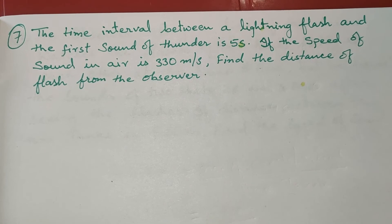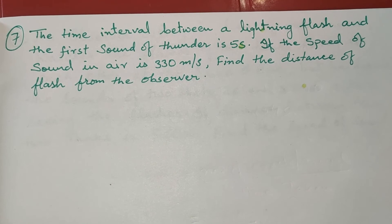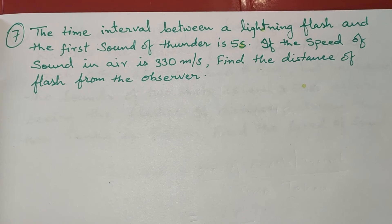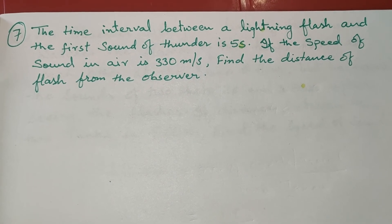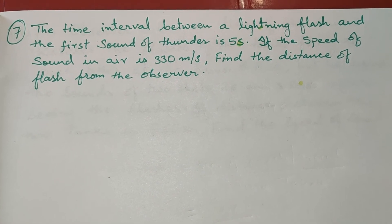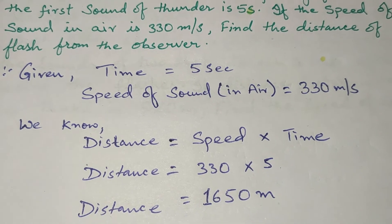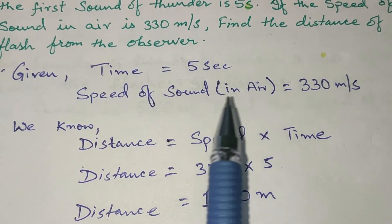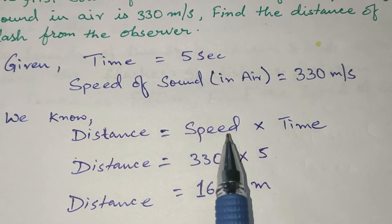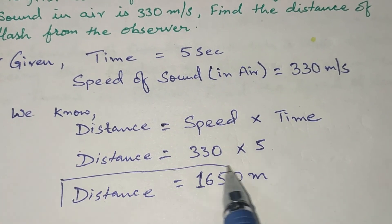Question 7 says the time interval between a lightning flash and the first sound of thunder is 5 seconds. If the speed of sound in air is 330 meters per second, find the distance of the flash from the observer. Given: time = 5 s, speed = 330 m/s. Distance = speed × time = 330 × 5 = 1650 meters.